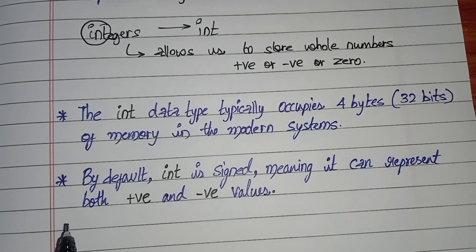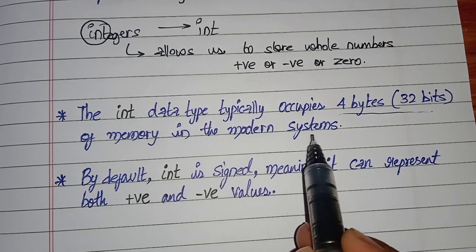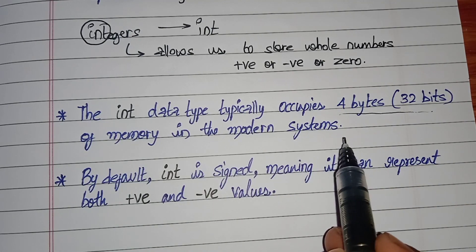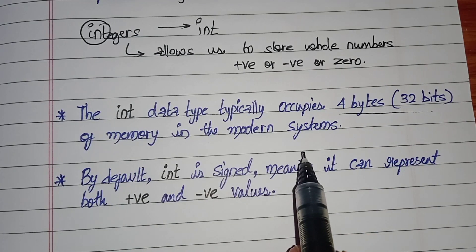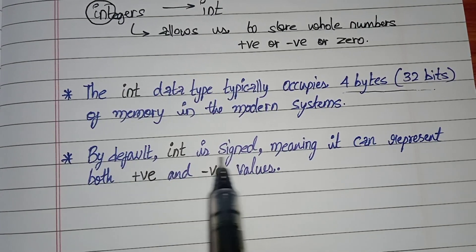The int data type typically occupies four bytes, so four bytes means 32 bits of memory in the modern system. The size of int may vary depending upon the platforms or the compilers being used.